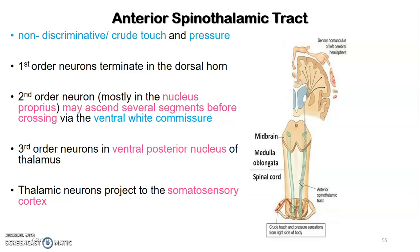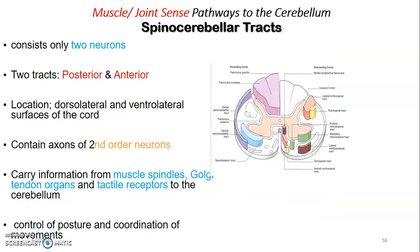Both relay at the ventral posterior nucleus of the thalamus and both project onto the third-order neuron, which projects to the somatosensory cortex. Looking at the diagram: first-order neuron cell body is in the dorsal root ganglion, terminates at the dorsal horn; second-order neuron ascends a few levels, decussates at the anterior commissure, then ascends within the anterior column as the anterior spinothalamic tract. Within the midbrain and pons, anterior and lateral spinothalamic tracts together form the spinal lemniscus, then relay at the ventral posterior nucleus of the thalamus, projecting to the primary somatosensory cortex.